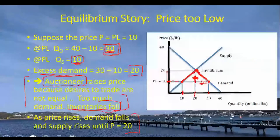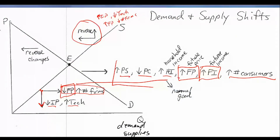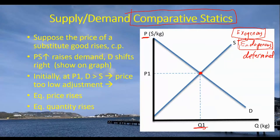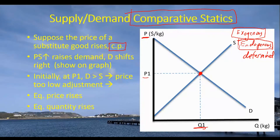Most of the variables shown on the graph — the demand-side factors and supply-side factors — are exogenous. A comparative statics exercise asks: what if we change one of the exogenous variables, ceteris paribus? Ceteris paribus means we leave all other exogenous variables fixed at their original values while changing just one, and then ask how that affects the endogenous variables — in particular, the price and quantity of the product.